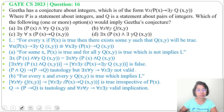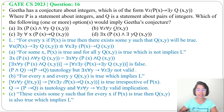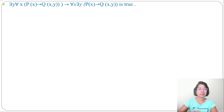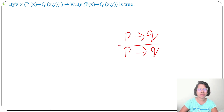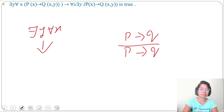Next, option C: there exists y for all x, P(x) implies Q(x,y). In statement form: there exists some y such that for every x, if P(x) is true then Q(x,y) is also true — which implies the conjecture. From there exists y for all x, P(x) implies Q(x,y), we are concluding for all x there exists y, P(x) implies Q(x,y). The P implies Q part on both sides is equal. Now check the quantifier.